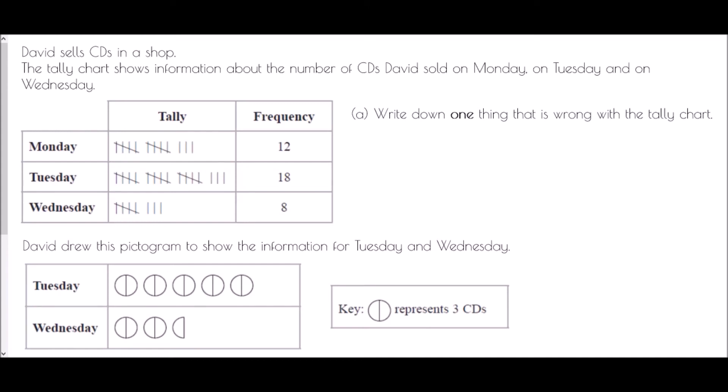So next we're going to look at David who sells CDs in a shop and the tally chart shows information about the number of CDs David sold on Monday, on Tuesday and on Wednesday. So write down one thing that is wrong with the tally chart. Well the first thing we need to do here is just check what we understand about tally charts. In terms of tallies, we take four and then we draw a line through. Now some people draw them going down, some people draw them going up, but regardless they always mean five at a time. So four lines going down and then one striking across means five.